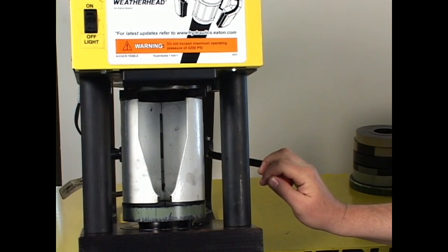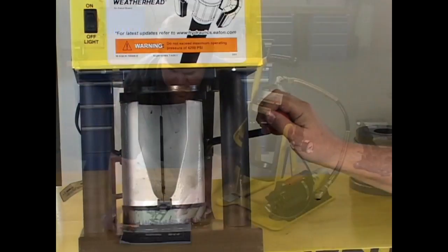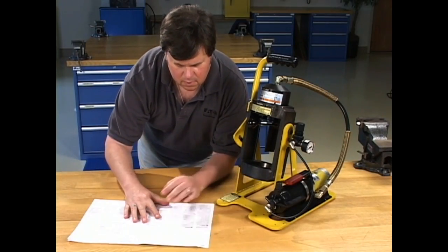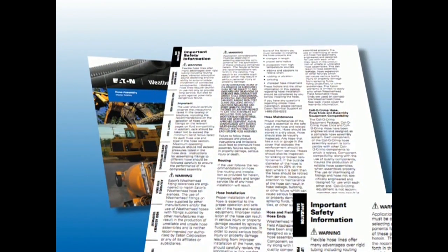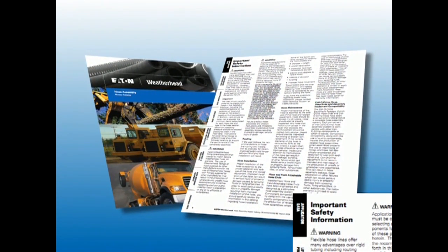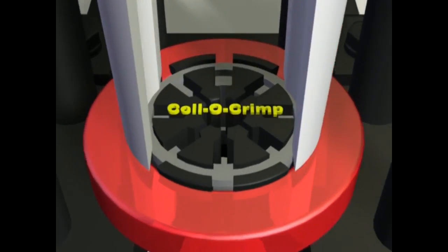Before you attempt to operate your new ColoCrimp machine, please view this entire video and read the setup and operating instructions booklet that was included with your particular system. It's imperative that you read the important safety information located in the front of the Eaton Weatherhead hose assembly master catalog. Also, pay special attention to these important safety guidelines.